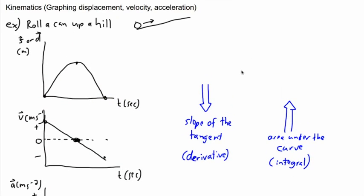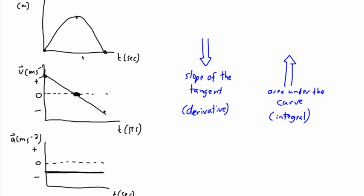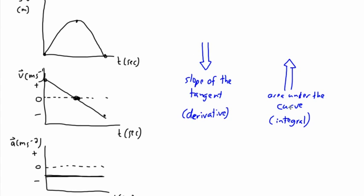In the last video we were looking at graphing displacement versus time, velocity versus time, or acceleration versus time. I gave an example of rolling a can up a hill and what the graphs would look like. I gave you a hint that if you go down, so to speak, then you do slope of the tangent or the derivative, and if you go up then you do the area under the curve.